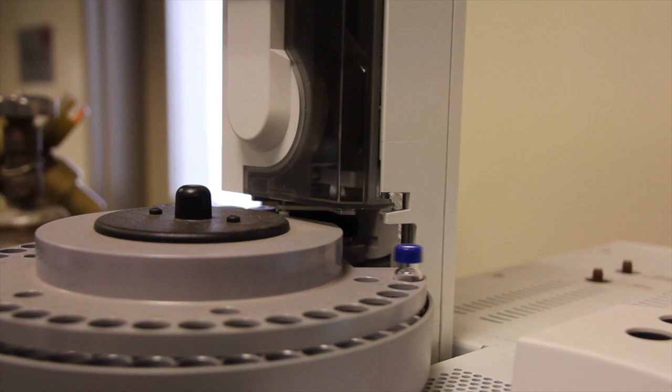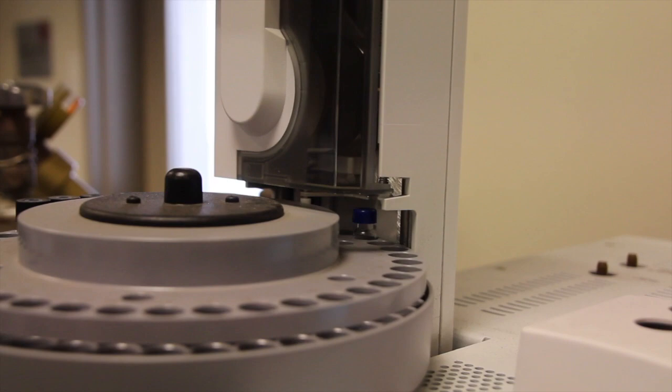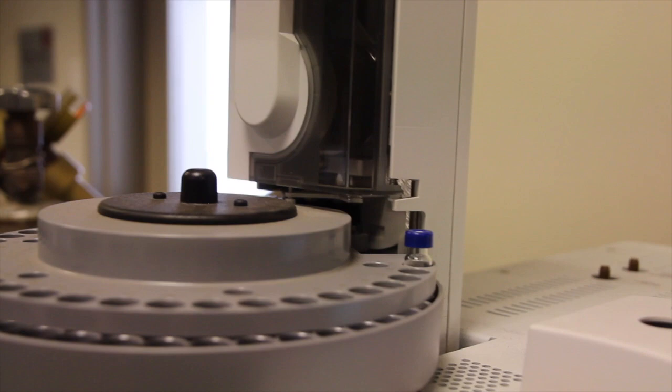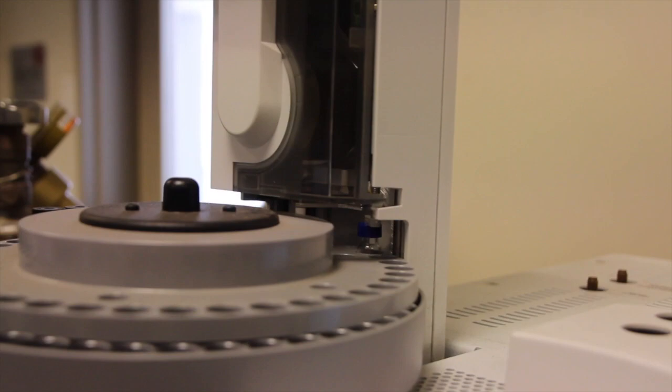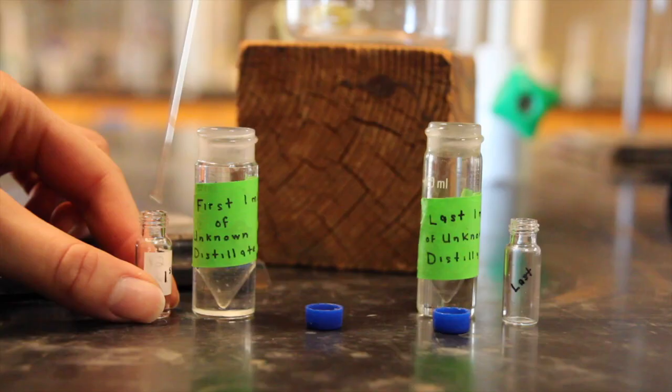In the second part of the experiment, your group will use gas chromatography to further identify the unknowns in the mixture. Gas chromatography involves running a chromatogram on each sample. Typically, a chemist would run a chromatogram on an authentic sample for comparison purposes. Fortunately, your professor has already run the authentic samples and since each compound has a characteristic retention time at certain temperatures in a particular gas chromatography column, we can use these as a reference.